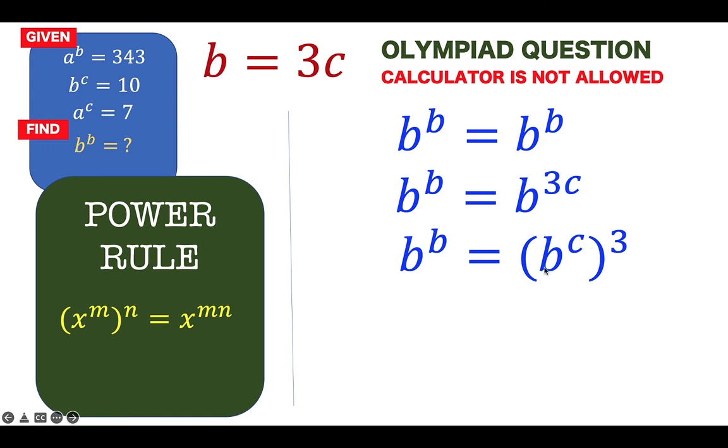Now, the beauty of rewriting this equation this way is because we know the value of B raised to C. It's given to be 10. So therefore, we can replace this B raised to C by 10 to arrive now at B raised to B equals 10 to the third, where 10 is equal to B raised to C, and 10 to the third is equal to 1000, which is now the value of B raised to B.